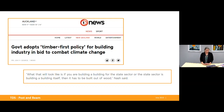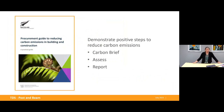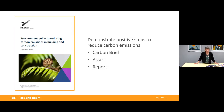Some of you might have seen the media where the Honourable Stuart Nash said that if you're building a building for the state sector, it has to be built out of wood. Now the procurement guide wording is not quite so definitive, but it is now mandatory for government agencies planning new buildings with a value over nine million dollars to demonstrate they are taking positive steps to reduce carbon emissions. They must prepare a carbon brief, assess the carbon emissions of design options and report these. If they choose a design that is not the lowest possible carbon option, they must identify the reason and have the decision signed off by the Chief Executive. We all know timber is a great way to achieve low embodied carbon, so it makes sense to use timber to meet these objectives.